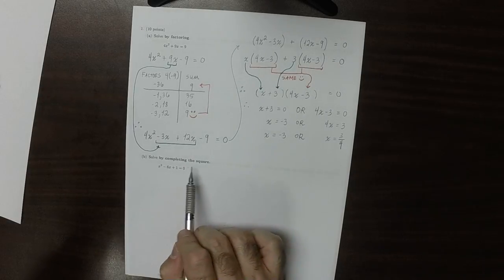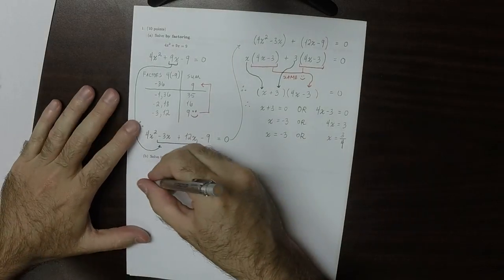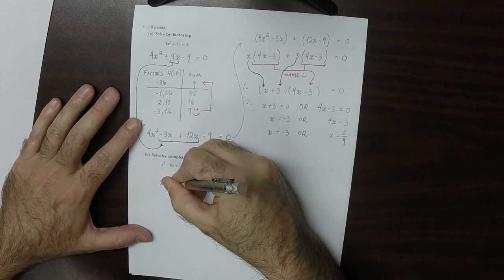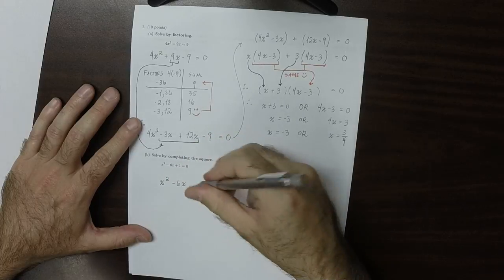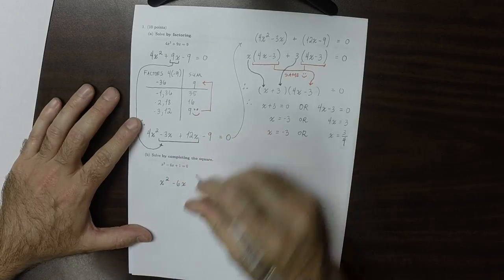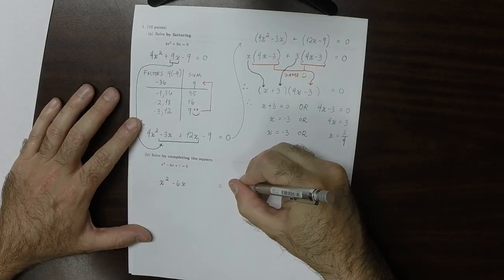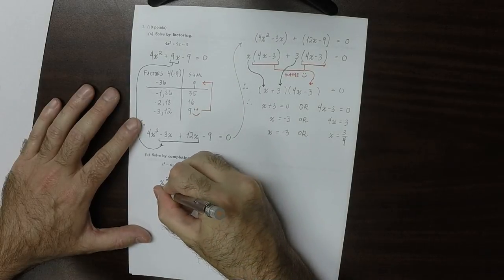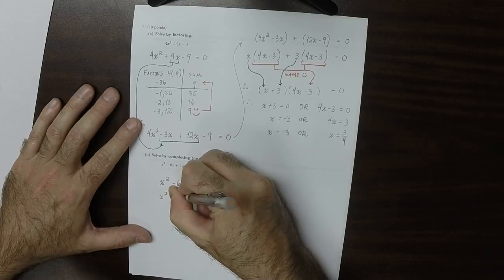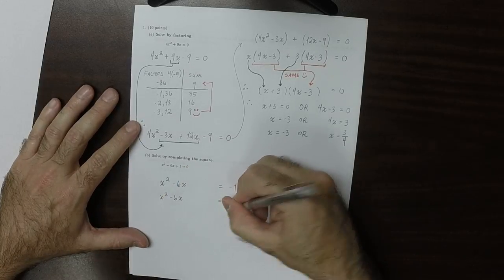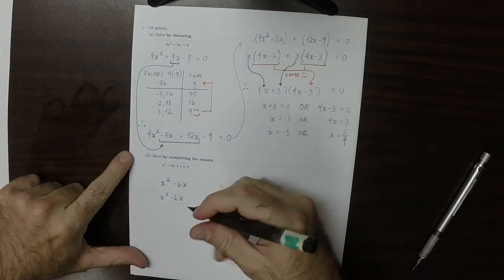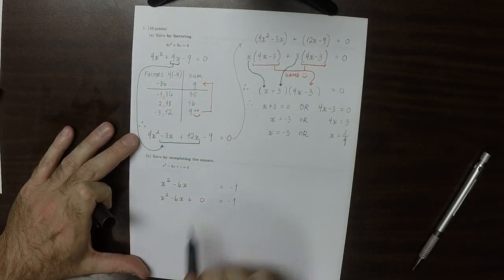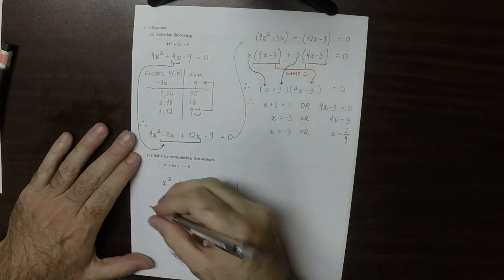This says solve by completing the square. In this case, we'll collect everything with x on the left-hand side: x squared minus 6x. Everything without x goes on the right-hand side, so the 1 moves over and the right-hand side is negative 1. In the horizontal space I've provided, I'm going to add 0 — but we're going to be clever about the way we select that 0.